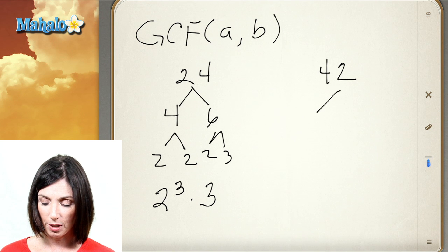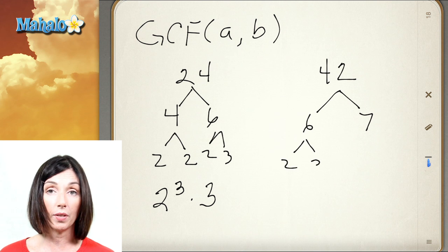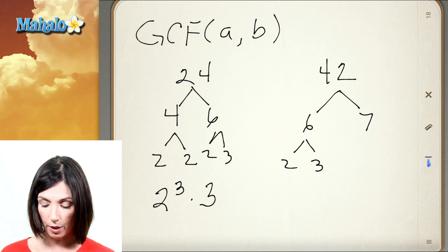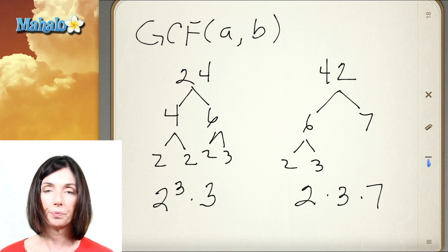Let's look at 42. 42 is 6 times 7, and 6 is 2 times 3. 7 is a prime number. So the prime factorization of 42 is 2 times 3 times 7.